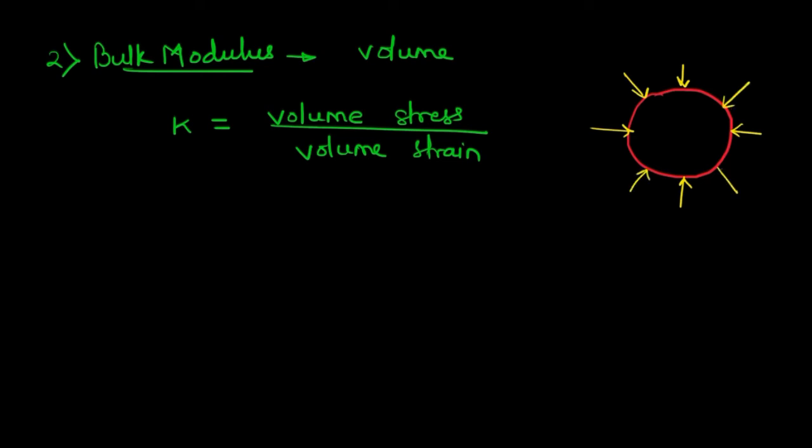If sphere per pressure apply here, so there will be change in volume of this sphere. If this is the original volume V, the change in volume will be, so this is like this, the change in volume will be V minus dV. This will be the change in volume.